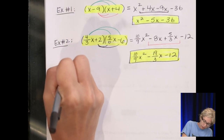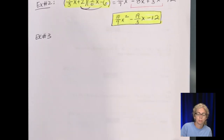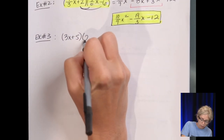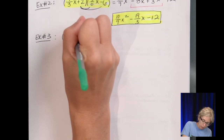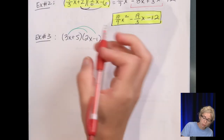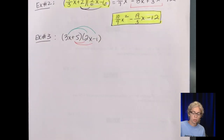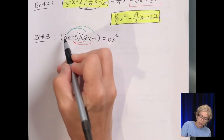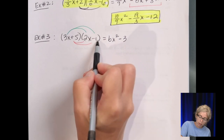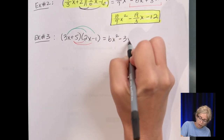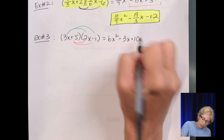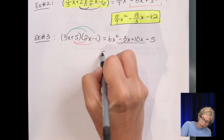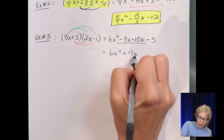Example number 3: let's do 3x plus 5 times 2x minus 1. Remember, distribute the 3x through that binomial, then distribute the 5 all the way through. Going nice and slow: 3 times 2 is 6, x times x is x squared; 3 times negative 1 is negative 3x; 5 times 2 is positive 10x; and 5 times negative 1 is negative 5. Combining like terms in the middle, we get 6x squared plus 7x minus 5.